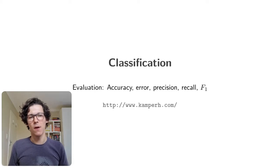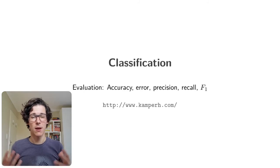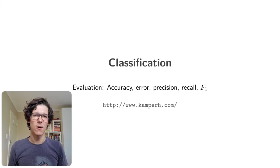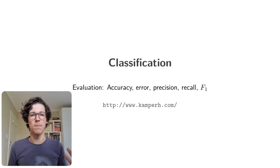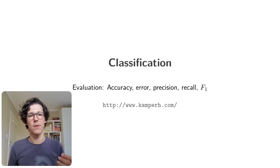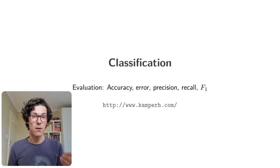In this module we're going to look at how we can evaluate the performance of a classifier. This might sound kind of obvious - why don't you just take the evaluation set and calculate the proportion of points that are assigned to the correct class? You can actually do that; that's called the model accuracy. But what we'll see is that that doesn't always give a good indication of how well a model performs on the classes that you're actually interested in.